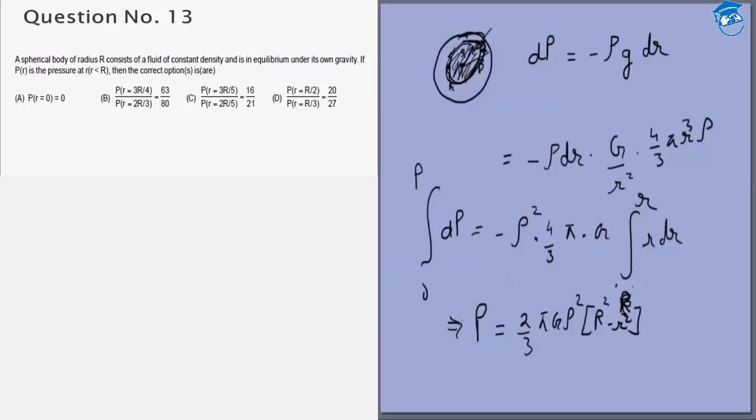Now it's just a simple question of putting in the options. We know that r equals 0, this is not 0. So the first option is incorrect.